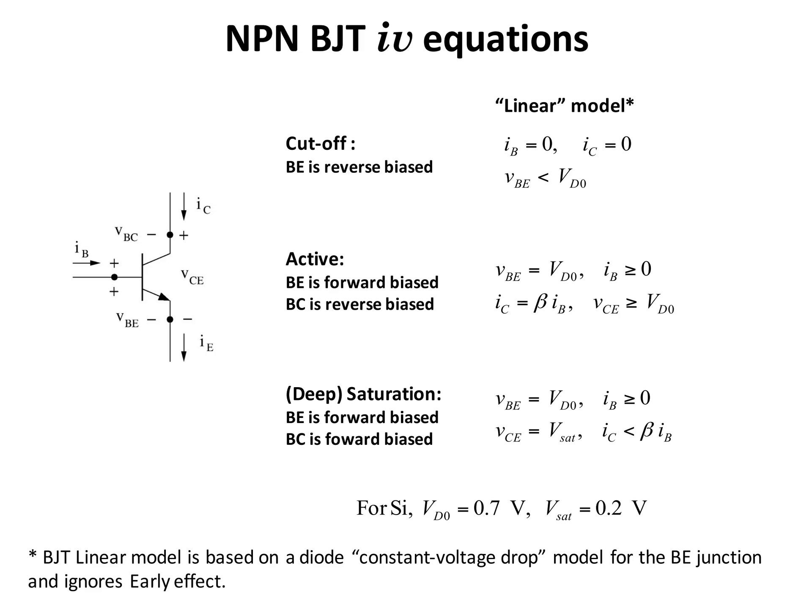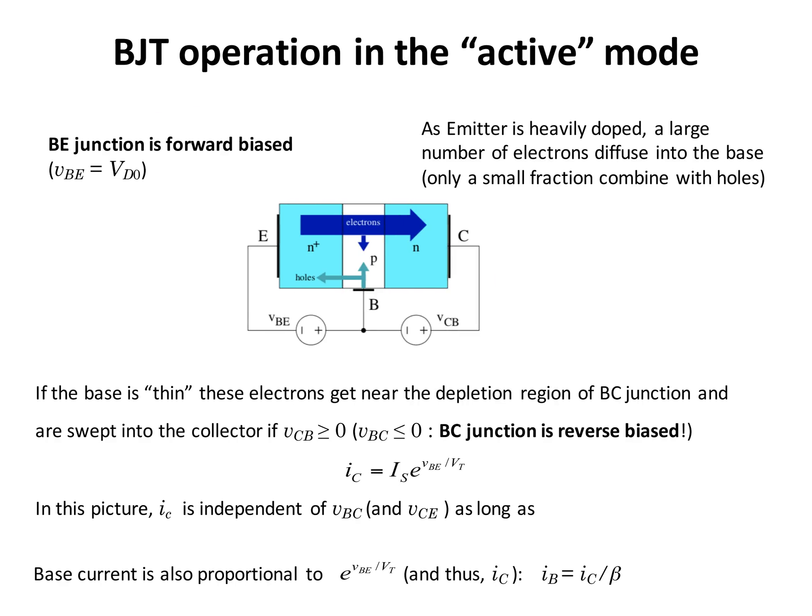To solve BJT problems we are going to use a linear model. However, the IV equations of BJT transistors consist of P-N junctions, so these IV equations are non-linear and have an exponential format. We will come back to the linear model to solve equations, but to understand BJT operation we will work with the non-linear equations. In general, BJTs have three regions of operation: cutoff, active, and saturation — we will use the deep saturation region for our analysis.